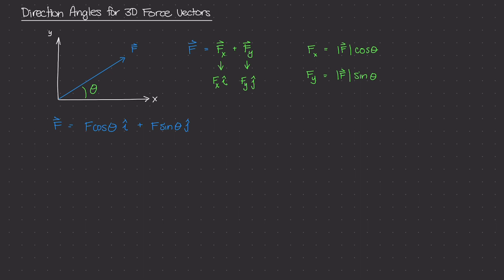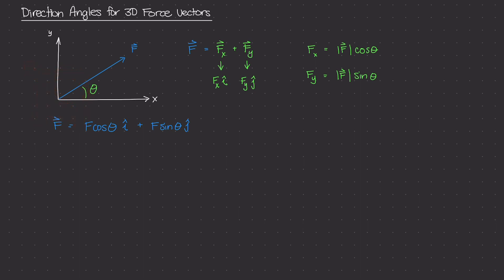Once we start getting into three-dimensional space, things start to get tricky. The reason is that this theta value was always taken from just the x-axis up to the force vector, which could be anywhere — first quadrant, second quadrant, third quadrant. We could figure out the x and y components using cosine and sine, but in three-dimensional space it's hard to identify which way is sine and which way is cosine. So we have to come up with a way to orient a force vector in 3D space.